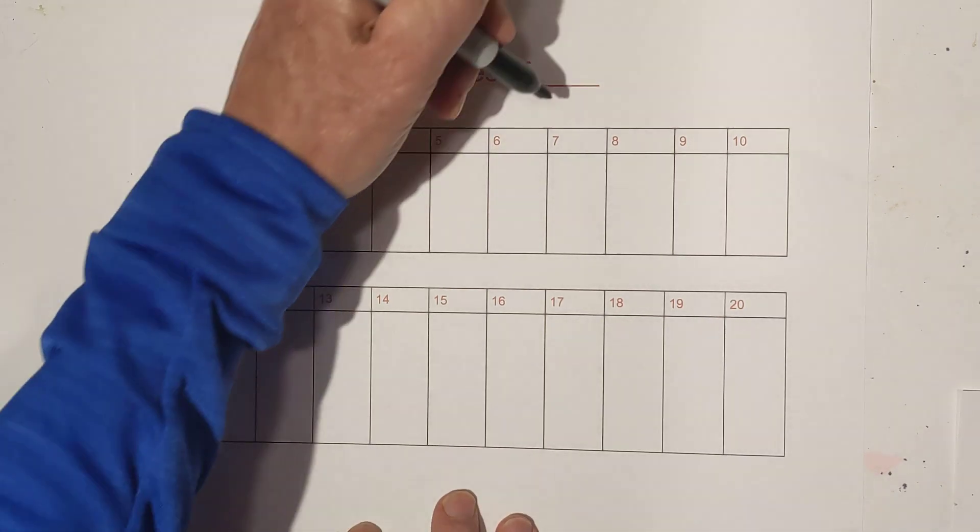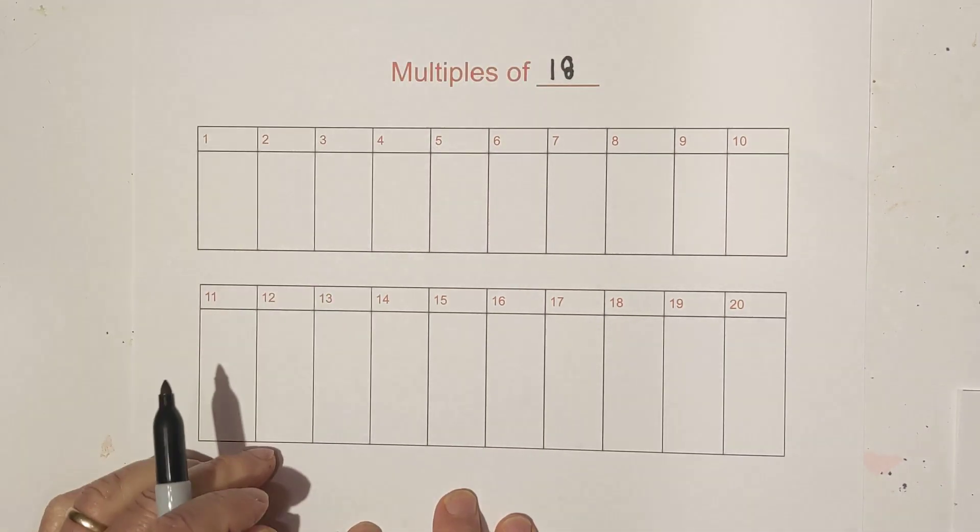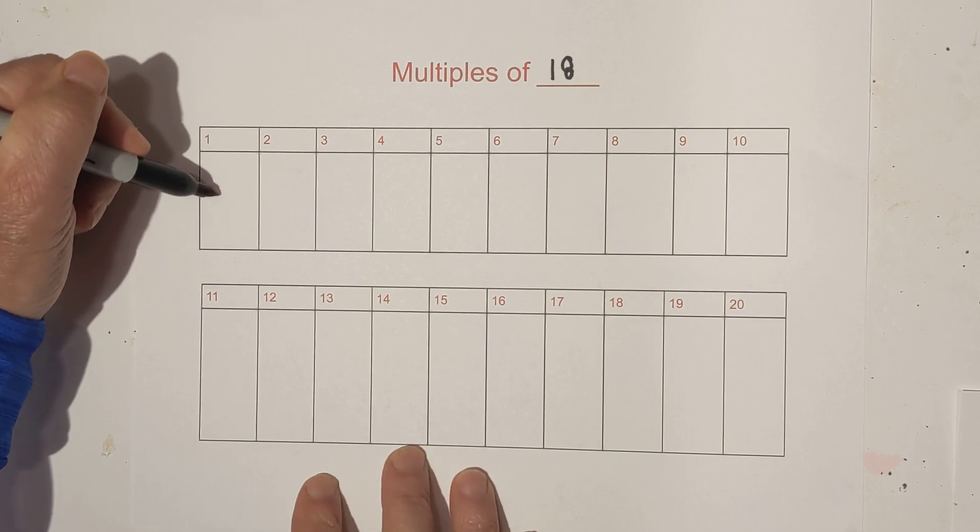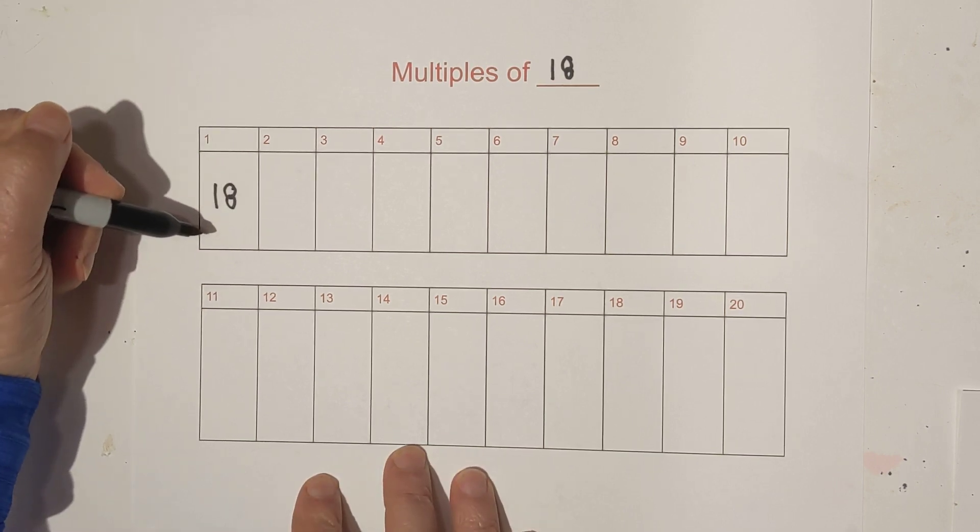Welcome to MooMooMath and Science and the multiples of 18. So let's go ahead and get started. 1 times 18 is obviously 18.